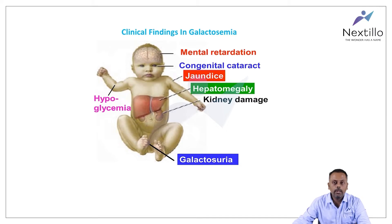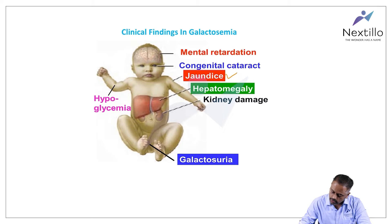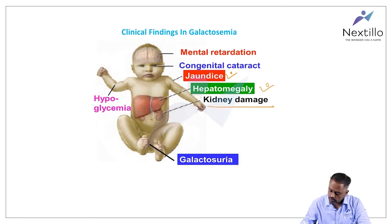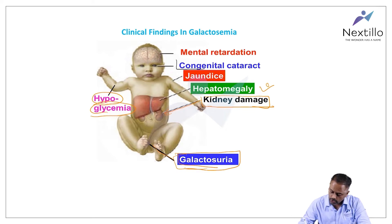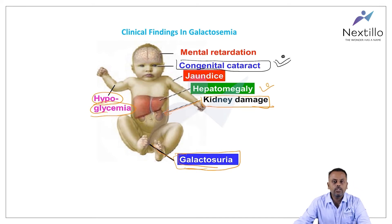This picture explains the clinical findings of galactosemia beautifully. Galactosemia is associated with jaundice (increased bilirubin), hepatomegaly (enlargement of the liver), kidney damage, mental retardation, hypoglycemia (decreased blood glucose level), and galactosuria. One characteristic feature of galactosemia is the appearance of congenital cataract — remember, congenital cataract is one of the hallmark features of galactosemia.